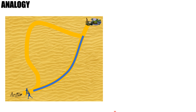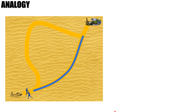You might be asking what will happen if they accidentally choose a wrong path or the water evaporates. This is a definitely valid point and it's what happens in reality. Let's consider a scenario where both of them follow their own paths twice.